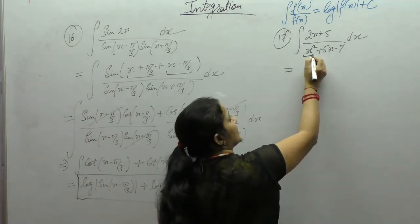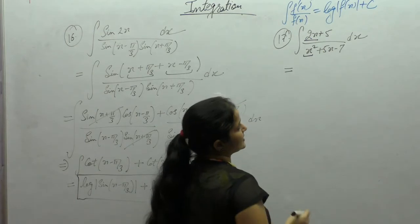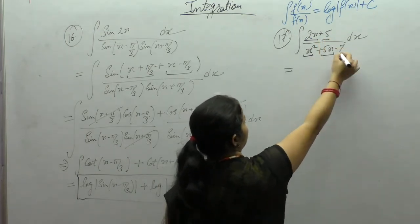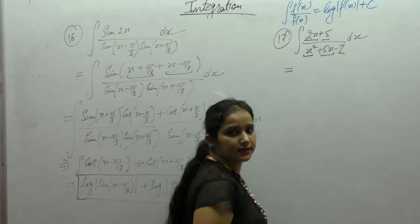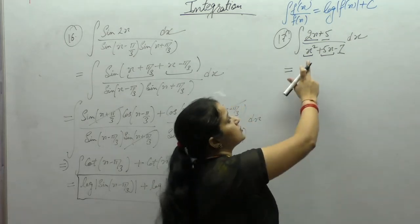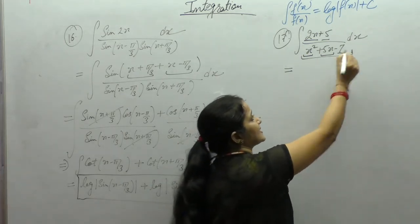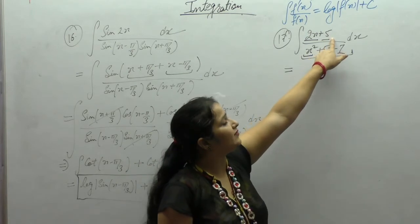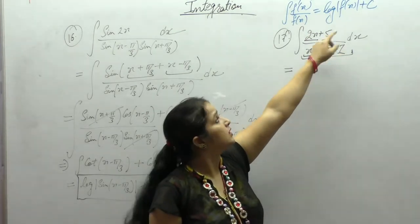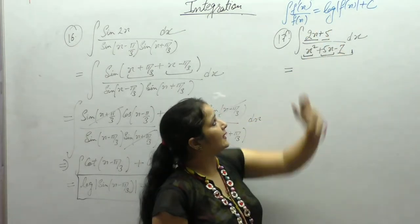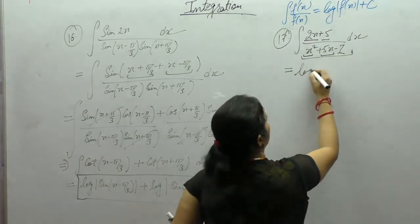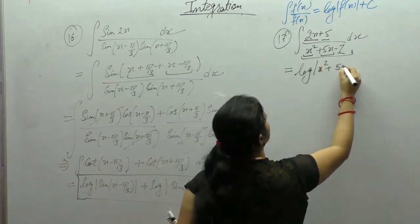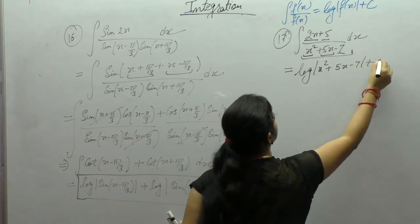The derivative of x² + 5x - 7 is 2x + 5, since derivative of x² is 2x, derivative of 5x is 5, and derivative of 7 is 0. So the numerator is exactly the derivative of the denominator, and we directly apply the formula to get log|x² + 5x - 7| + C.